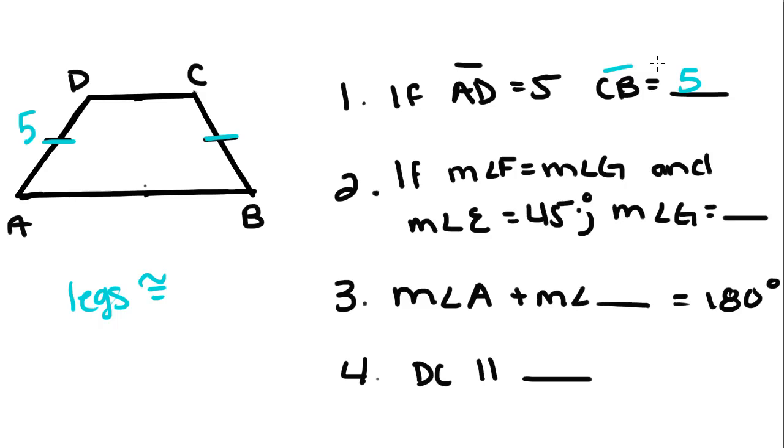If the measure of angle D equals the measure of angle C, so that means that these two angles are congruent, and the measure of angle A is 45 degrees, what's the measure of angle C?